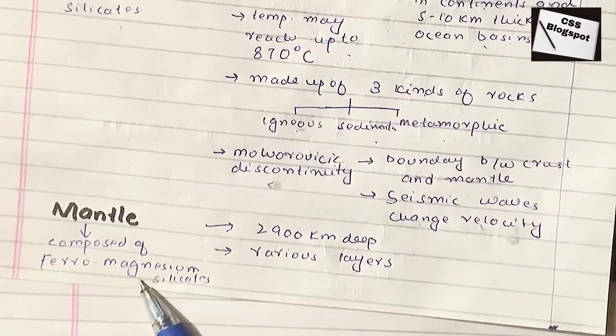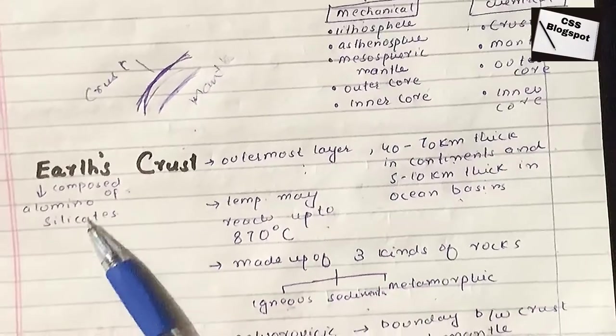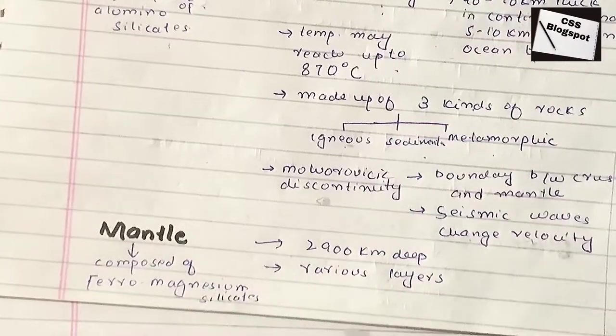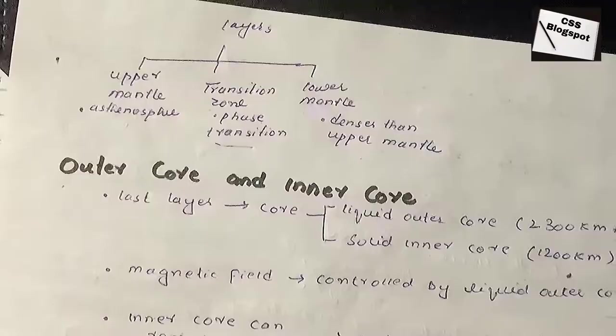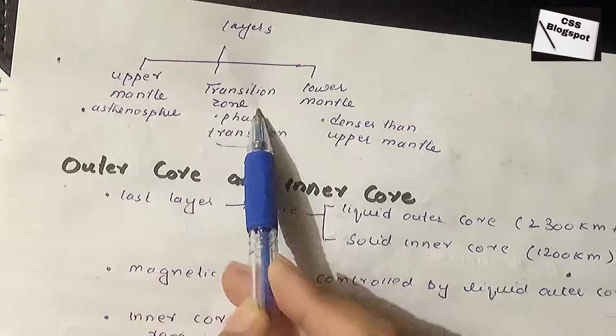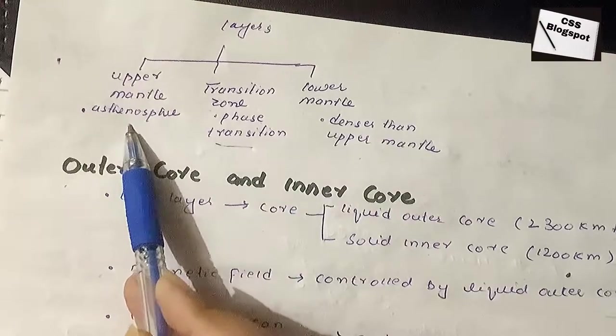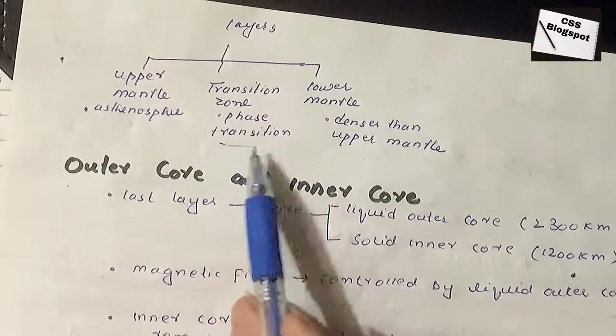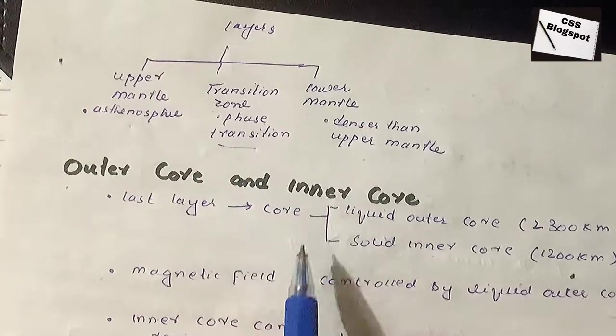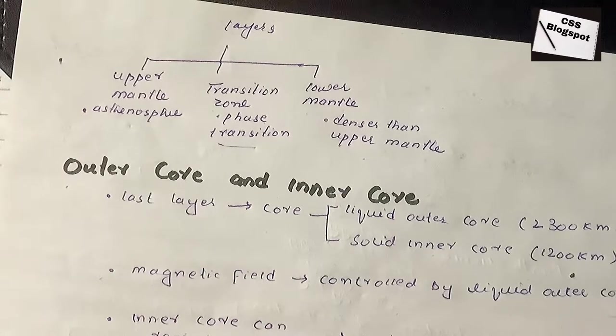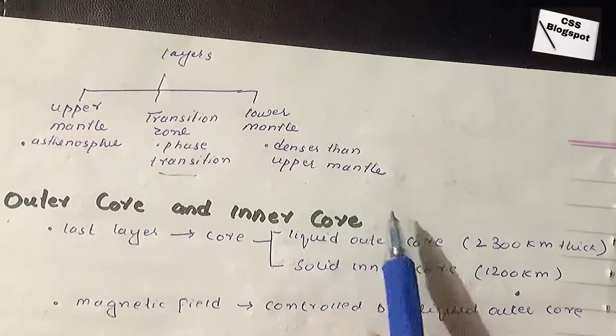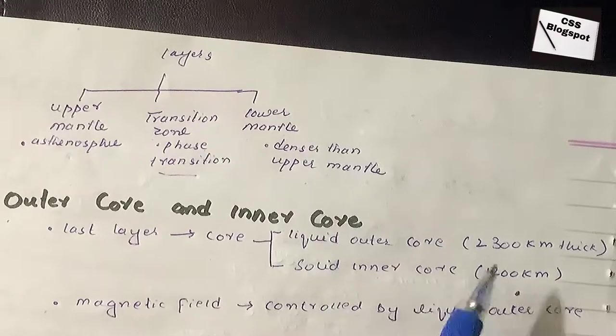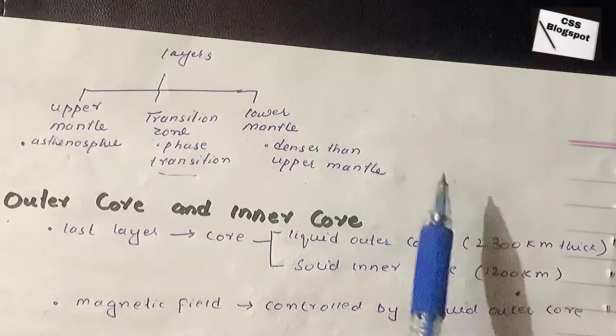The mantle extends about 2,900 kilometers deep and is composed of silicates. It has various layers: upper mantle, transition zone, and lower mantle. The upper mantle is a zone of weakness. In the transition zone, minerals undergo phase transitions where their structure, form, and atomic arrangements change. The lower mantle is denser than the upper mantle because as pressure increases, density increases.